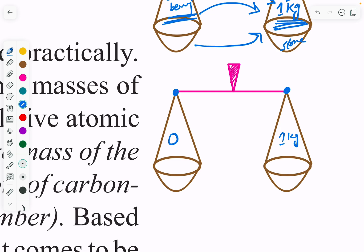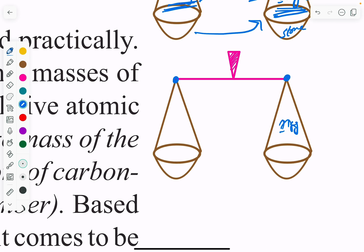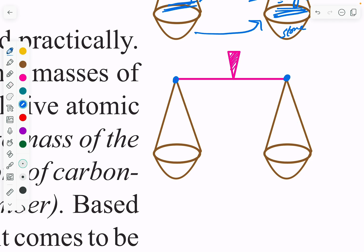So what did the scientists do? They made a standard weight for atoms. They said that every element is compared with Carbon-12. Why Carbon? Because carbon is available in abundance — it is naturally more available on Earth. That is why we use it as the standard weight.